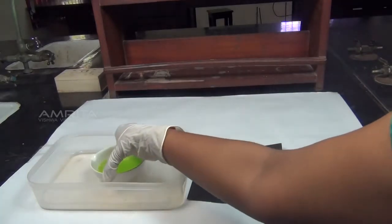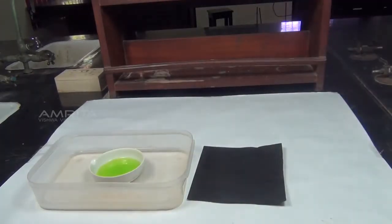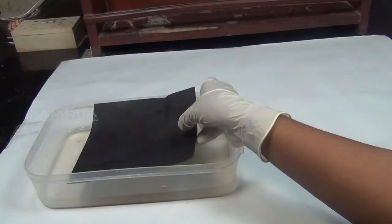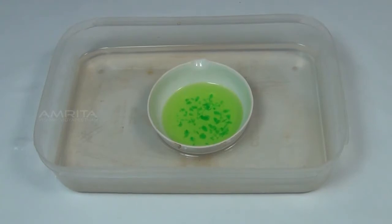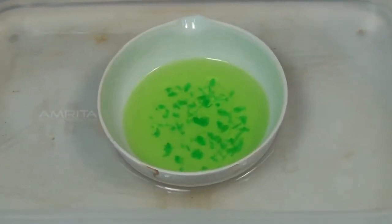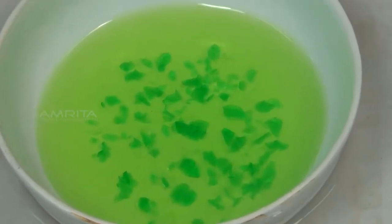Now place the china dish in a trough containing cold water. Cover the dish with a black paper and allow it to cool slowly for some time. On cooling, emerald green crystals of potassium trioxalatoferrate separate out.